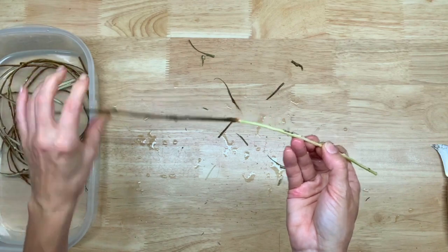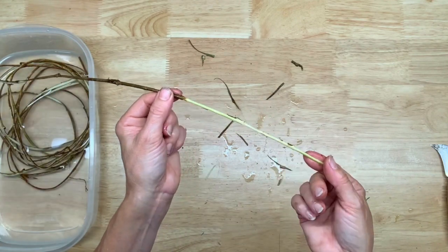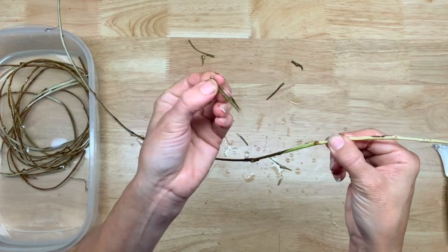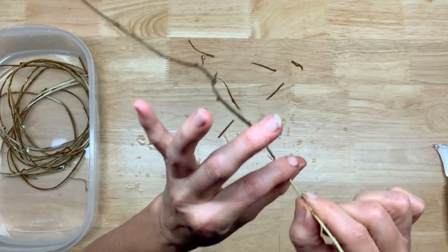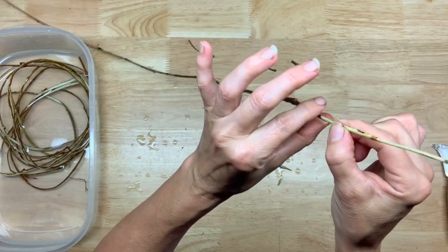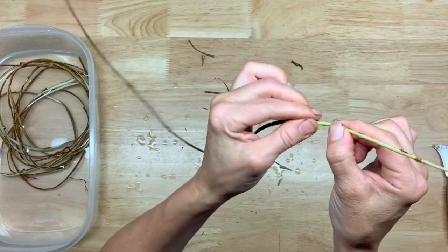I'm popping the bark off, and sometimes it'll pop right off like that. I'm grabbing it with my thumb and forefinger and just popping it off. This is really nice and easy to work with.